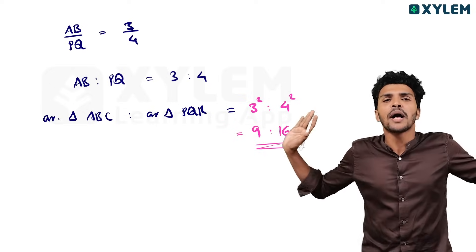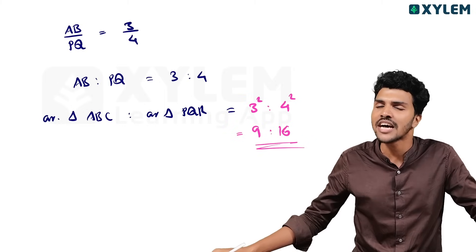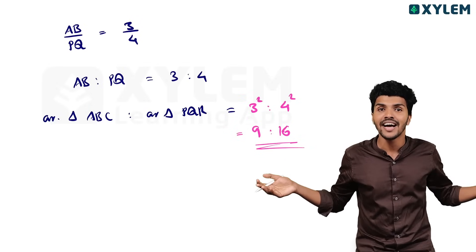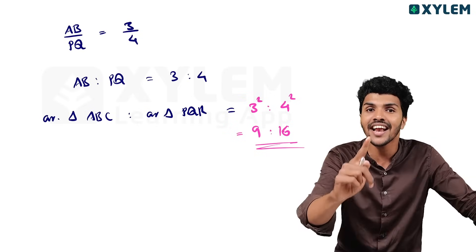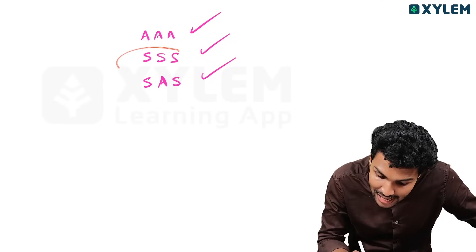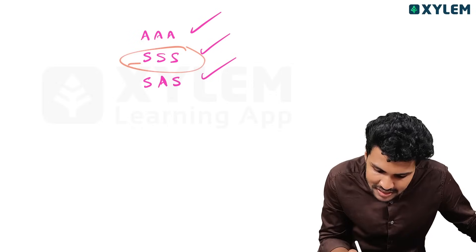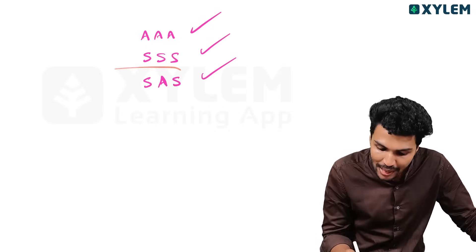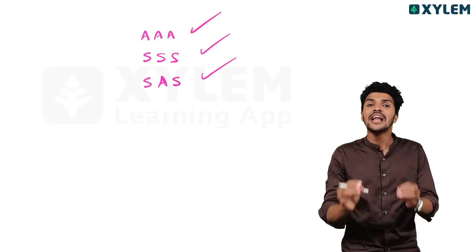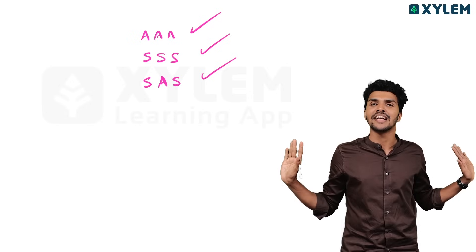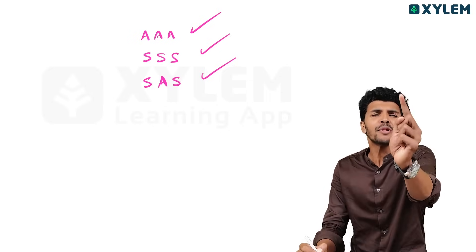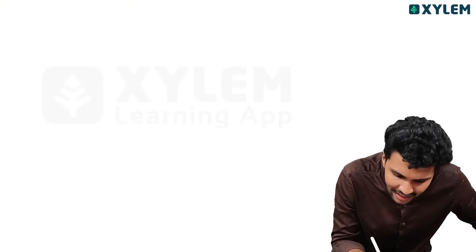So that is your answer. If you have a similar triangles problem in this chapter, the approach is the same. The triangles are similar because the shape is the same — that means the three angles are equal and the triangle is the same.